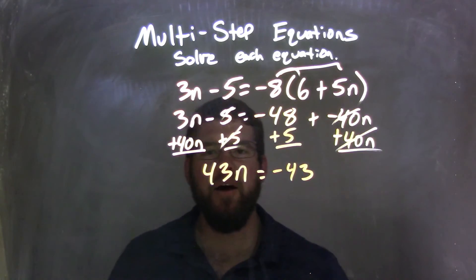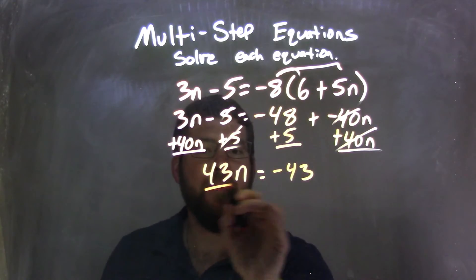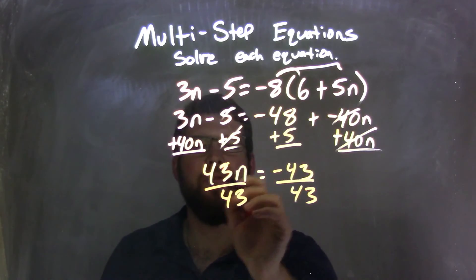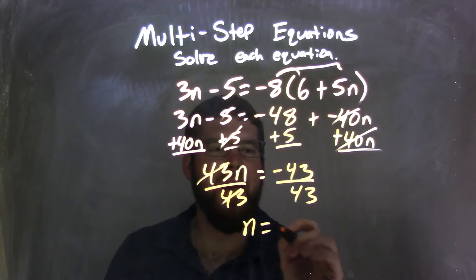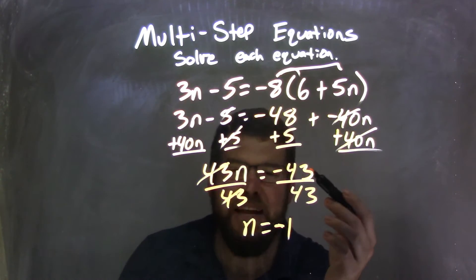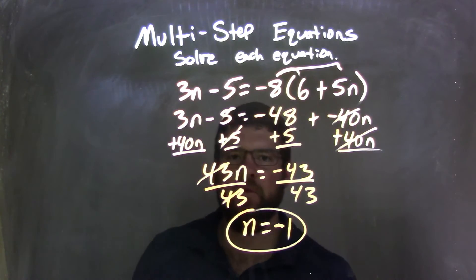So now I have 43n equals negative 43. I'm going to divide by 43 on both sides. Don't fret, it's pretty easy now. The 43s cancel, leaving me with just n, and negative 43 divided by positive 43 is negative 1. A number divided by itself is 1, and negative divided by positive is negative. So n equals negative 1 is our final answer.